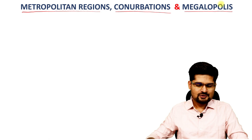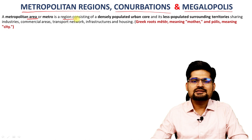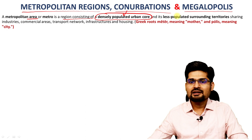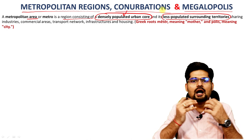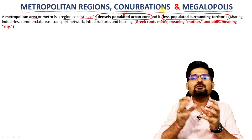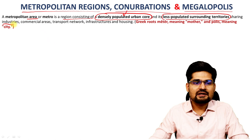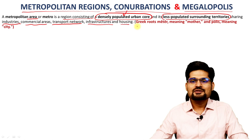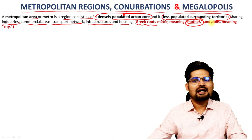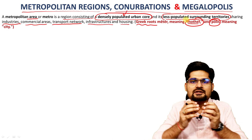A metropolitan area, or simply a metro, is a region consisting of a densely populated urban core and less populated surrounding territories — the umland or surrounding area. It is a densely populated core and a lightly populated surrounding area, interconnected, where industries, commercial areas, transport network, infrastructure and housing are shared. The Greek roots give us 'meter' for mother and 'polis' for city — so it's basically a mother city, the big city amongst all smaller settlements around.